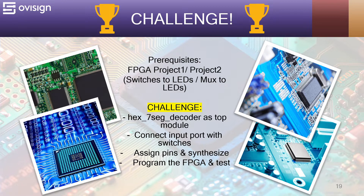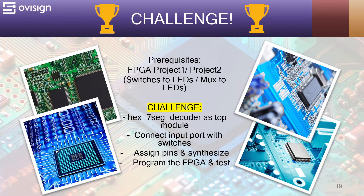Let's start Part 2 of this tutorial with a challenge. To successfully complete this challenge, you first need to watch FPGA project number 1 or project number 2, where you learn how to implement a basic FPGA project. The challenge is as follows: create a new Quartus project where you instantiate a hex-to-7-segment decoder as a top module, connect the input ports with the switches, assign the output pins, synthesize, program the FPGA, and test your project.